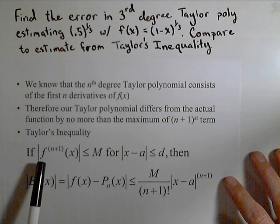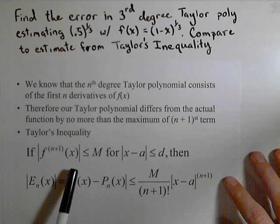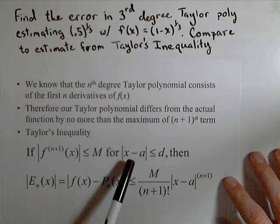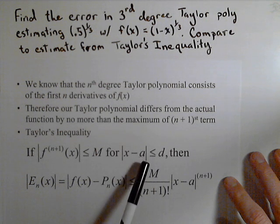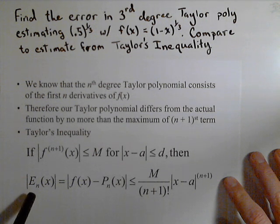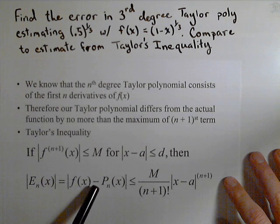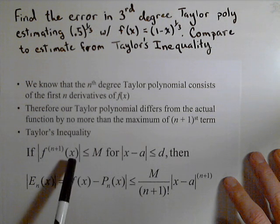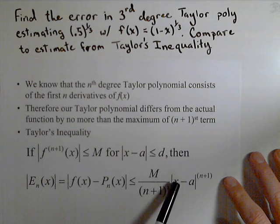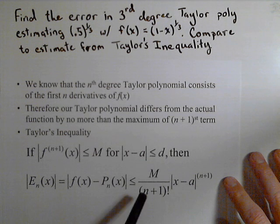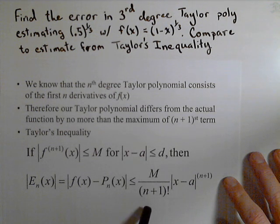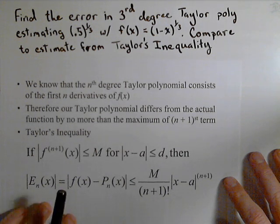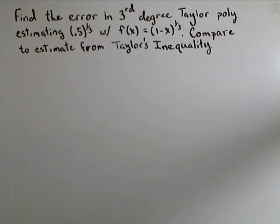So what we want to do is we want to bound the absolute value of the n plus first derivative when we have x minus a less than or equal to some constant. x will be the point that we're evaluating our Taylor polynomial at, a is the point where it's centered. The exact error is given by our function evaluated at x minus our Taylor polynomial evaluated at x. We expect that to be less than or equal to M, which is our upper bound on the n plus first derivative, over n plus one factorial times the absolute value of x minus a to the n plus one. Notice how similar this looks to a Taylor coefficient. Pretty much is, except we're maximizing the n plus first derivative as opposed to just evaluating it at x.